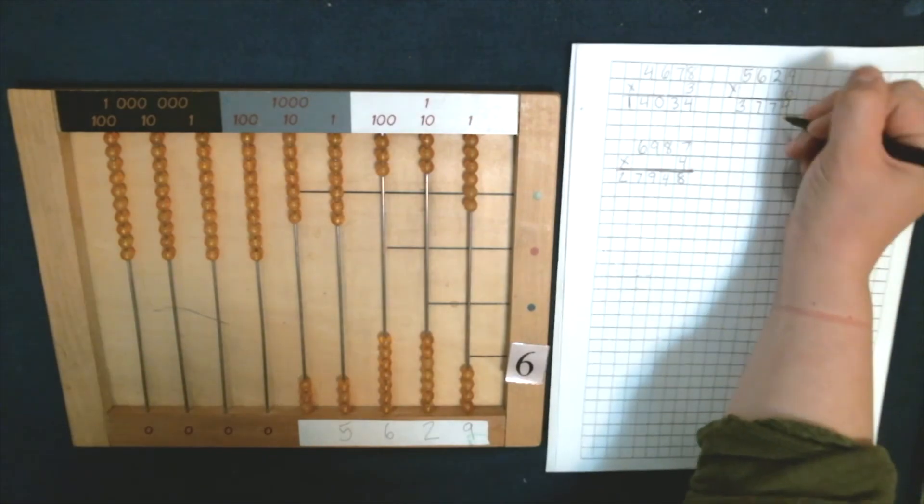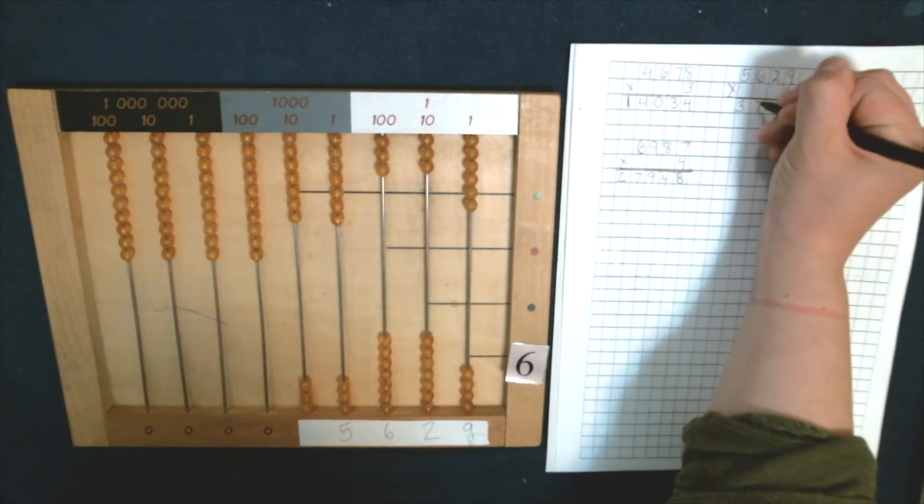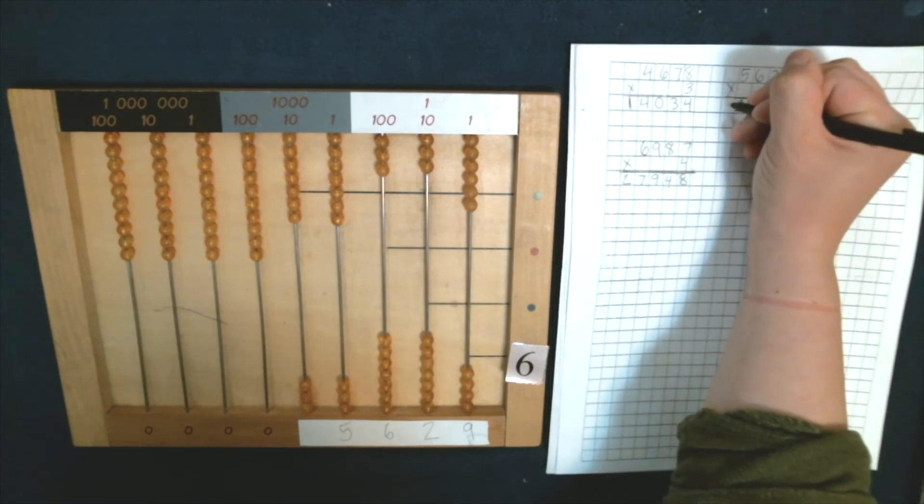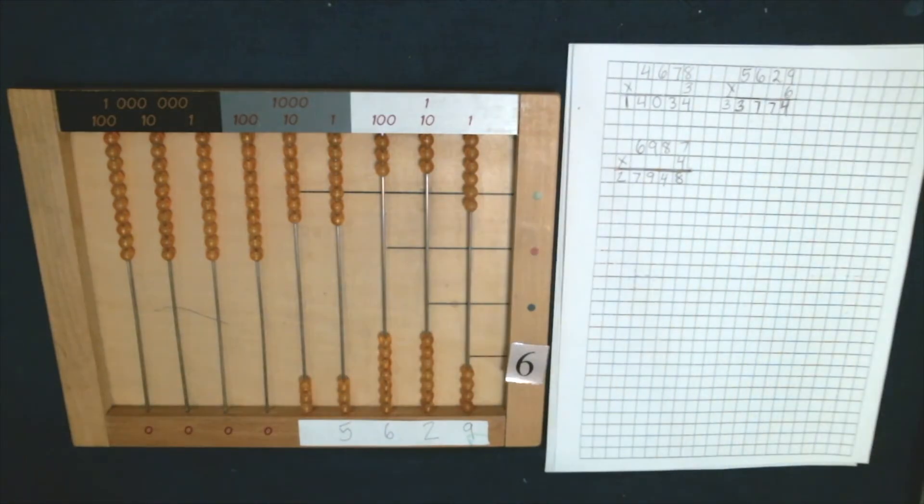So we have four units, seven tens, seven hundreds, three thousands, and three ten thousands. 33,774. So that's one digit multiplication on flat bead frame.